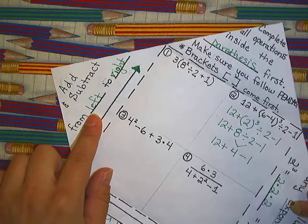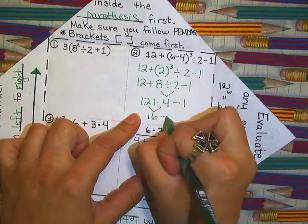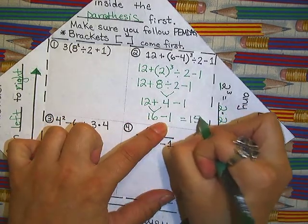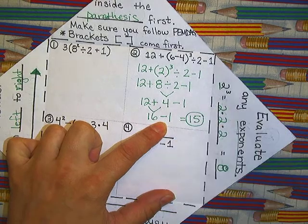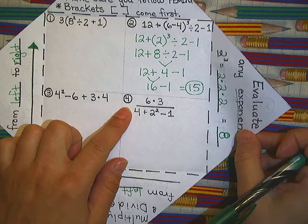And your last step of course, step four is addition and subtraction. And since I have two of those, I am going to do what comes first left to right. So twelve plus four, and then sixteen minus one, and our answer is fifteen.